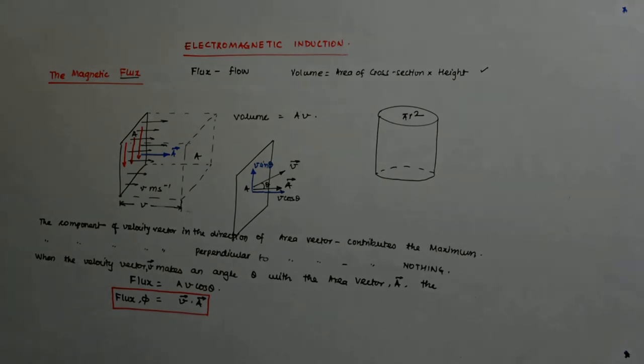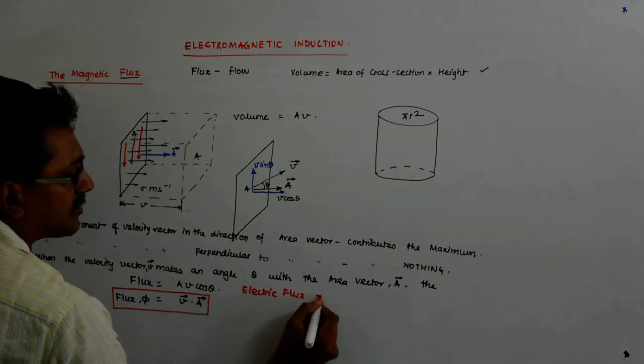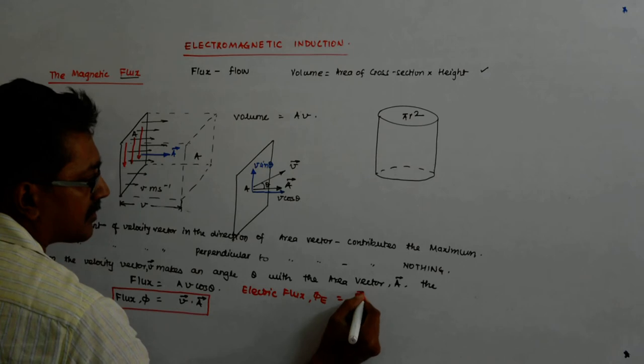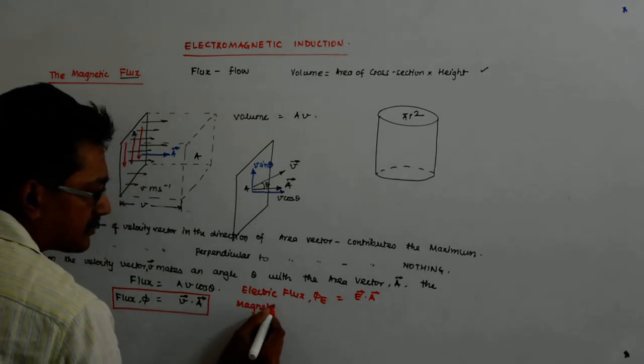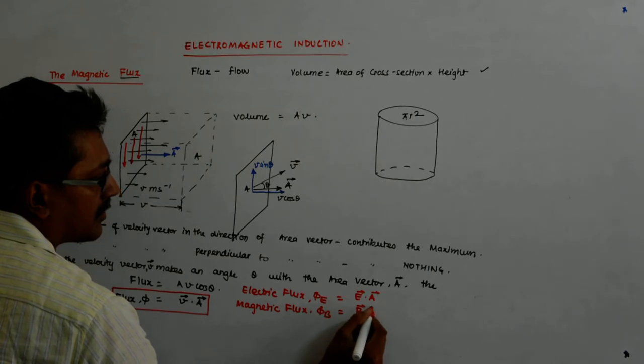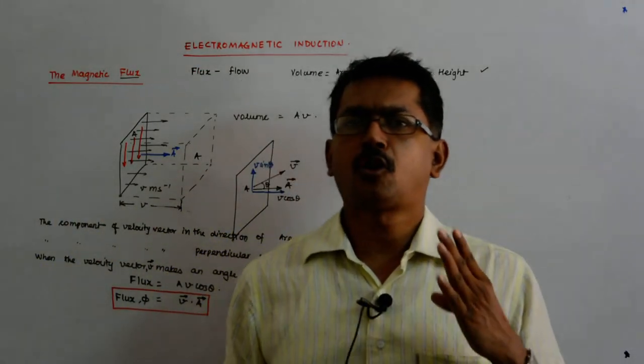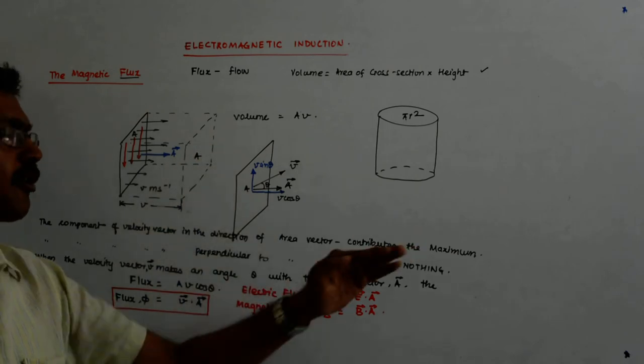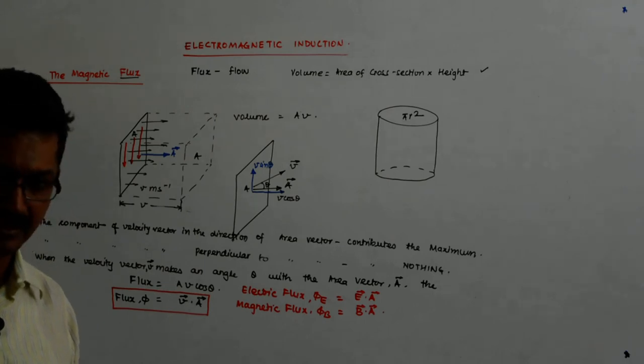At the moment we understand that, immediately you understand that electric flux, which we denote by phi E, becomes E dot A. And the magnetic flux? Phi B, that is B dot A. How simple. And you should understand this. If I am talking about E dot A, in fact I am talking about what? Everything that is crossing this in my direction. Everything that crosses this window.